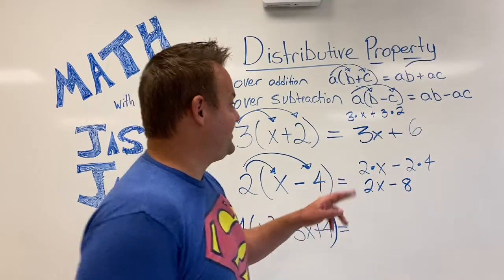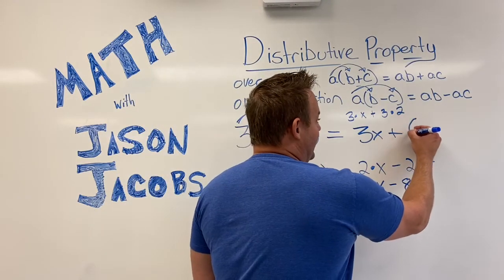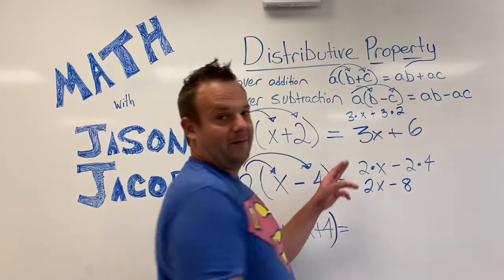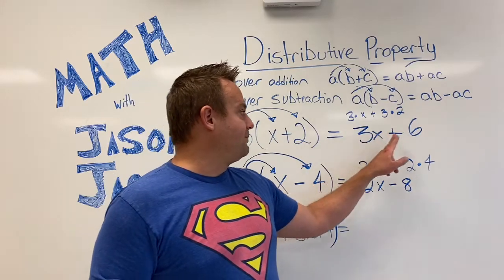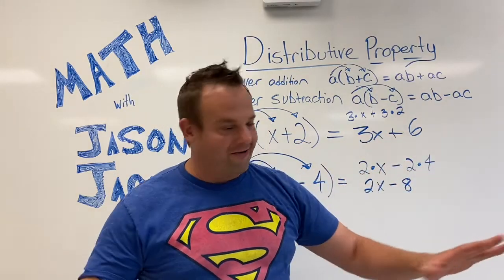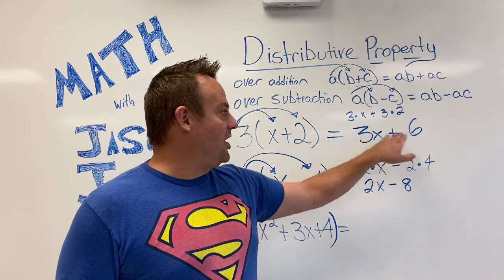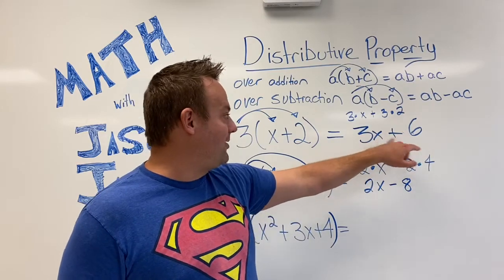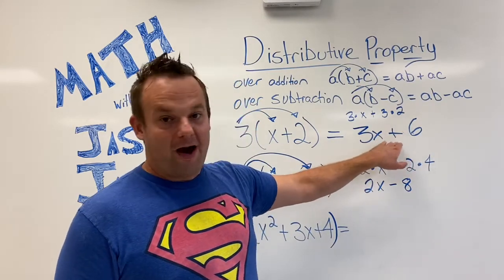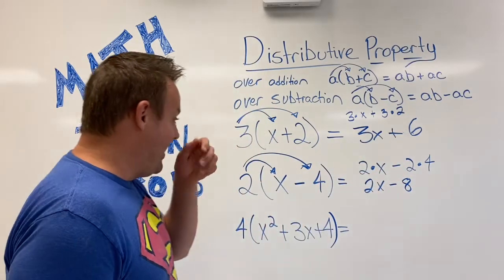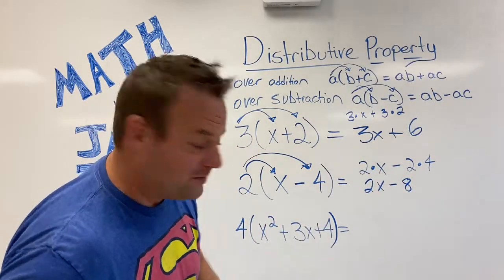Oh, common mistake that some people do is they'll say like, for example, in this one, 3x plus 6 is 9x. Wrong, wrong. These are unlike terms. If I were to model this out, I'm actually going to show you how to model this one out in just a second. And I'll explain like and unlike terms guys.